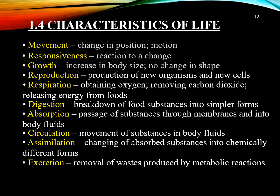Catabolism is the breakdown of complex chemical substances into simpler components — for example, digestion of protein into amino acids. Anabolism is the building of complex chemical substances from smaller, simpler components — for example, use of amino acids to build new proteins in the body. Next is responsiveness, which is the body's ability to detect and respond to changes in the internal and external environment. For example, withdrawing the hand when pricked by a needle. Nerve cells respond by generating electrical signals called nerve impulses, and muscles respond by contracting to generate force and move body parts. Next is movement, which includes motions of the whole body and many types of movements within the body at the cellular and organ level.